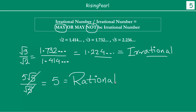So we have seen that among all simple operations — addition, subtraction, multiplication, and division — if you take two irrational numbers and apply these basic operations, the result may or may not be an irrational number. All these examples prove the same point.